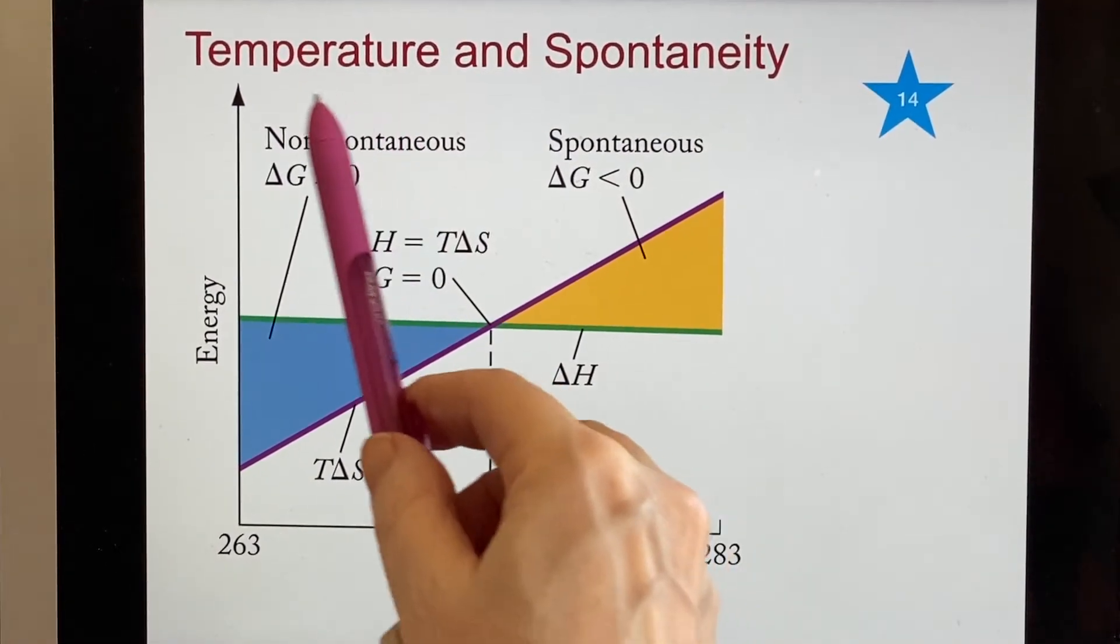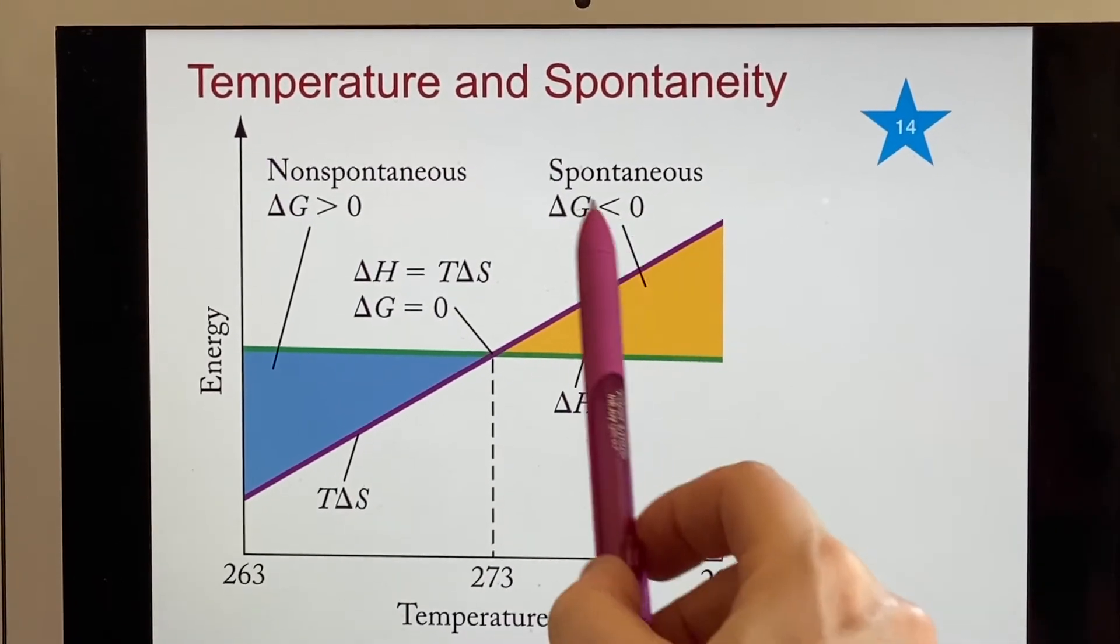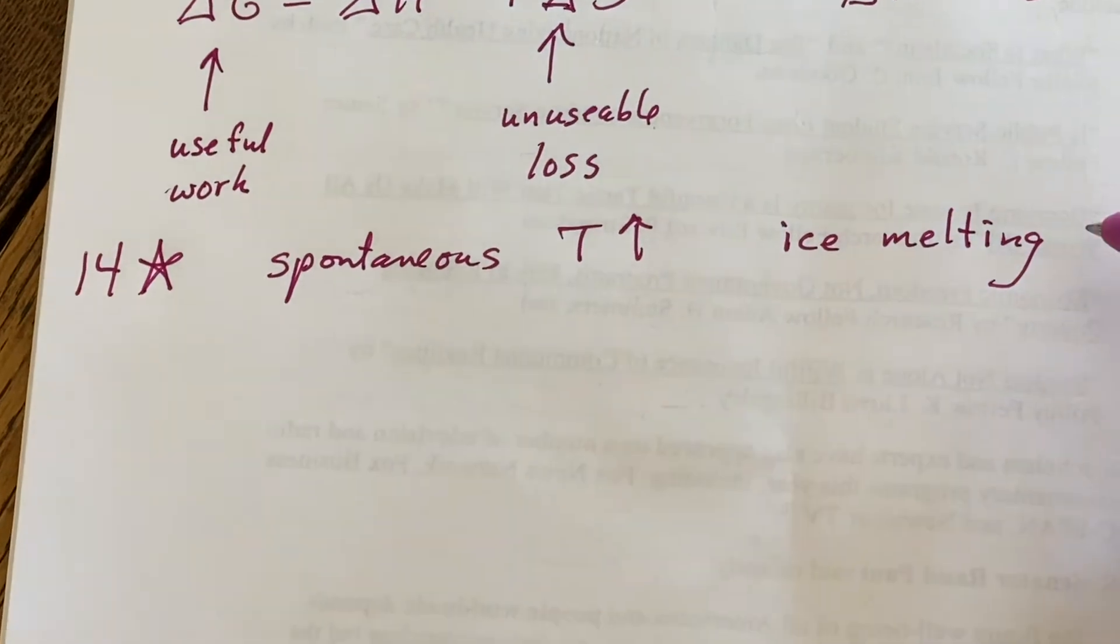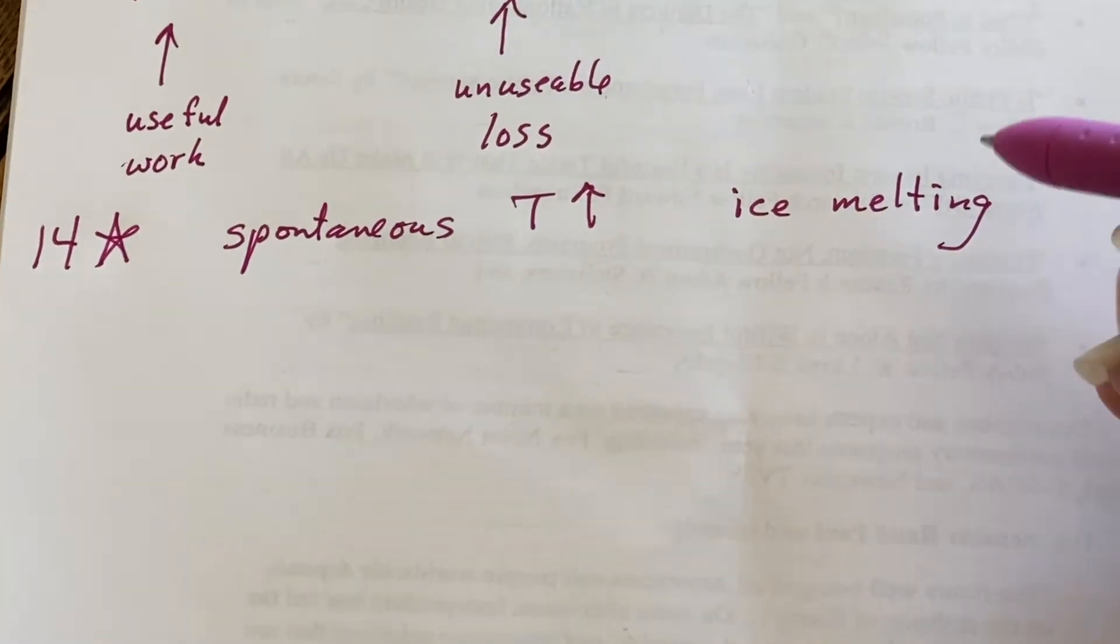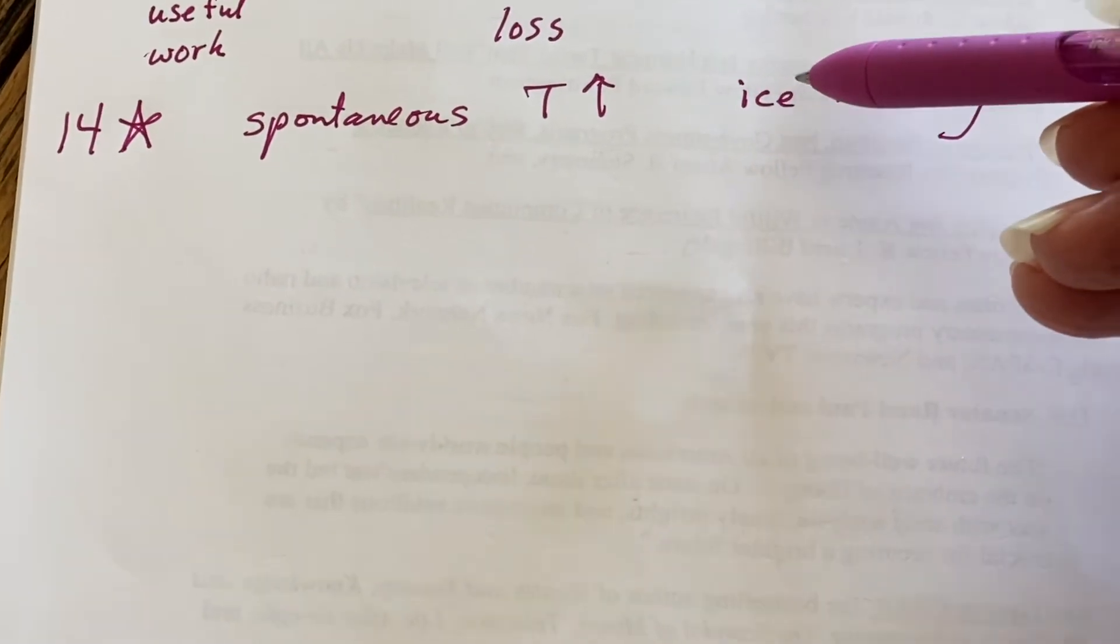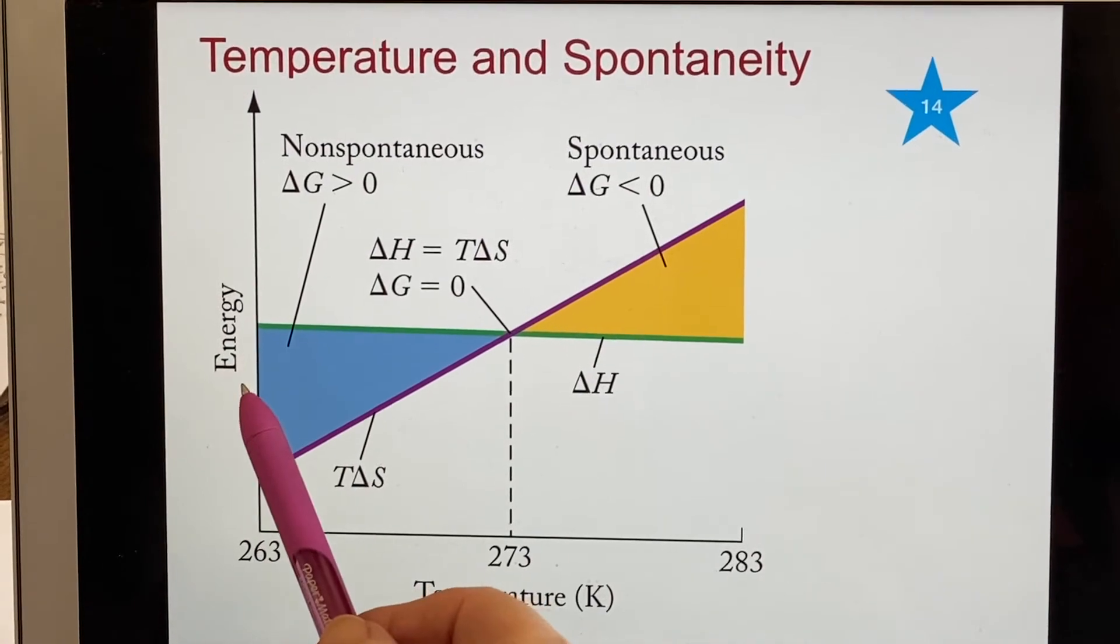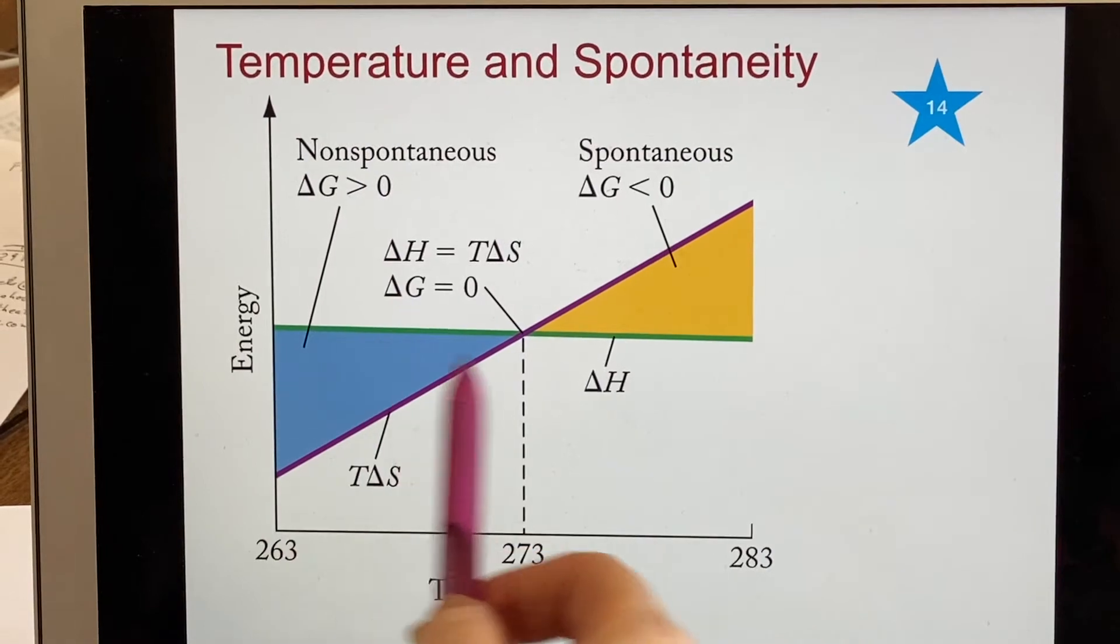The way they've written this they say non-spontaneous. They're considering this to be spontaneous when the temperature is higher, so they must be analyzing ice melting in order for us to be understanding what this picture was about. Because they're saying when the temperature is high this thing is a spontaneous reaction, and we know that that is what happens when the temperature is higher than zero degrees Celsius - ice will melt. And they're making a very interesting point here by saying that the reaction itself has a delta H that does not vary.